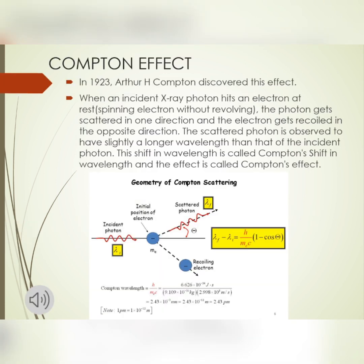The Compton effect, as discovered by Arthur H. Compton in 1923: when an incident X-ray photon hits an electron at rest — mainly the electron is spinning without revolving — the photon gets scattered in one direction and the electron gets recoiled in the opposite direction, as shown in the diagram. The scattered photon is observed to have a slightly longer wavelength, designated lambda-f, than that of the incident photon wavelength, designated lambda-i.